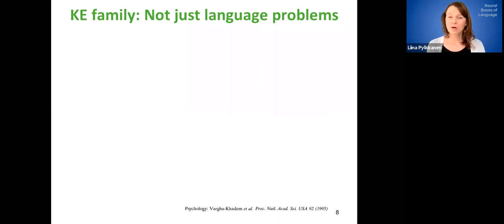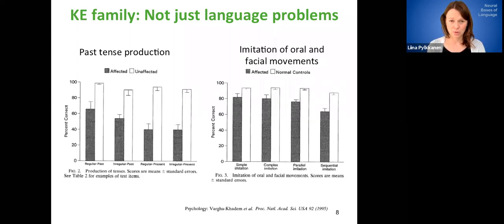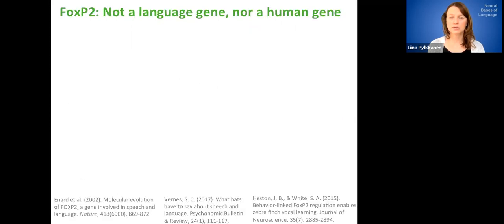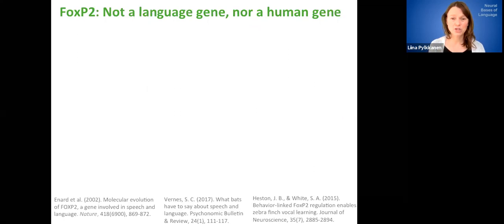So they're not typical and also their problems are not just in language. So specifically, here I have a comparison or juxtaposition between some language data from the family and then data from a task in which they're asked to imitate oral or facial movements. And the language test is past tense production. And so here the affected members are the shaded ones and they score lower than the unaffected members. That's what we would expect. But then they also score lower on this kind of imitation task. So not only do they have a language deficit, but they also have some motor problems that are not directly about language. So on the basis of that kind of data, we can already start being suspicious about this being a language gene. So it seems to cause problems that go beyond language.